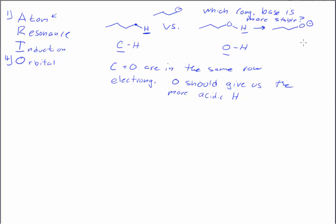The O minus is more stable because O is more electronegative than carbon. O can better stabilize that negative charge compared to carbon. So we will box in this molecule. It is the more acidic of these two molecules based on the atom argument.